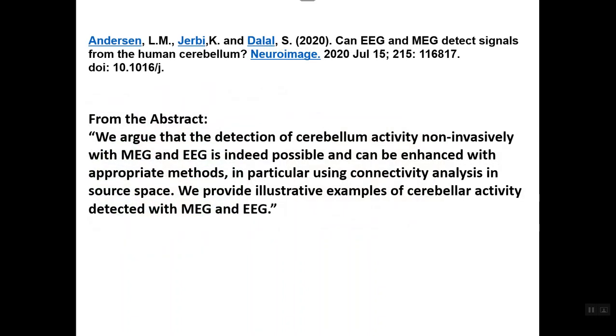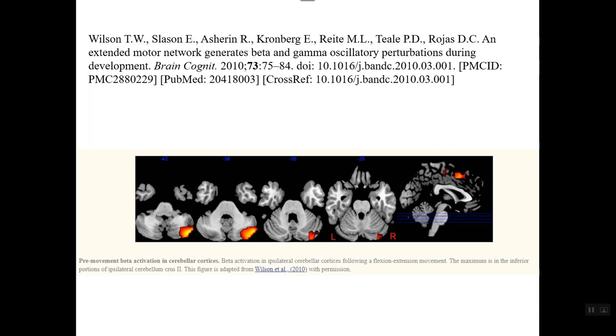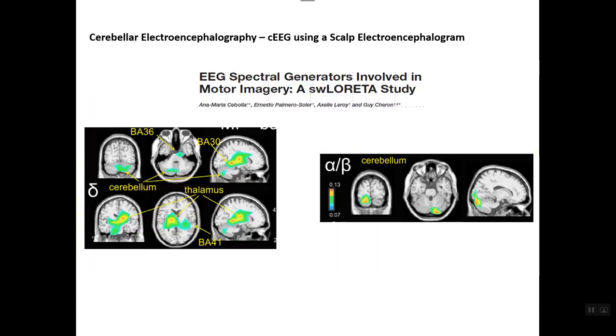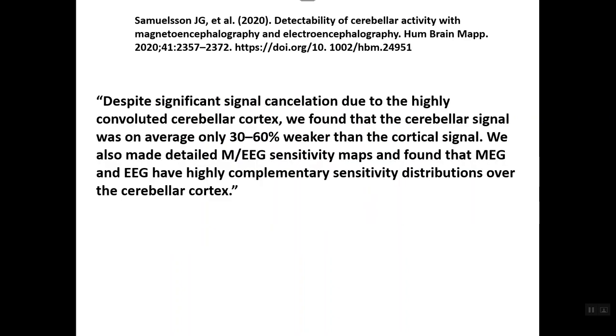Here's a study by Anderson et al. where they can measure cerebellar sources using magnetic encephalography and EEG from the scalp surface. This is another study showing the source localization in the cerebellum. This is another source localization using swLoretta in the cerebellum. This is actually motor imagery where the subjects would imagine moving, and you would see the cerebellum light up when they imagine moving. This is a study by Samuelson et al., and what they found is that, indeed, you can measure cerebellar deep sources from the scalp surface, but it's roughly 30% to 60% weaker than the cortical signal. The localization accuracy is pretty similar, but it's a weaker signal, so you've got to have good quality recording conditions.